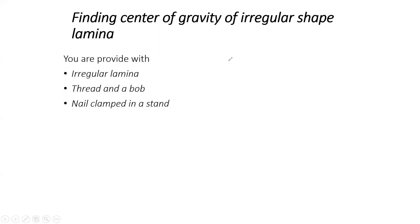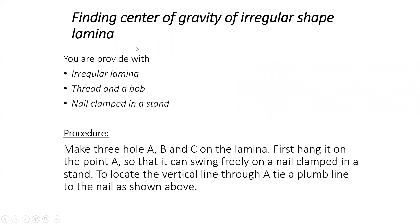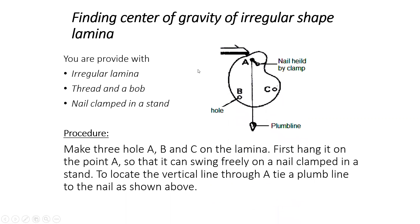We have a card and we want to find its center of gravity or center of mass. We make three holes in the card — a minimum of two holes will work, but for accuracy we use three. We made three holes: one at position A, one at position B, and another at position C.